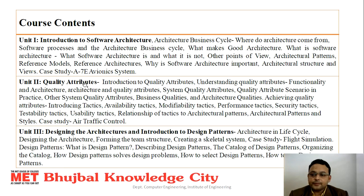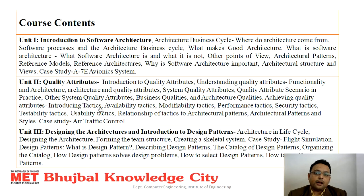These are the course contents. There are six units in this course. The first unit consists of the introduction of software architectures, software business cycles, and the role of different stakeholders in software development. In the second unit, we will discuss about quality attributes and how to use those quality attributes to achieve software quality in the software architectures.